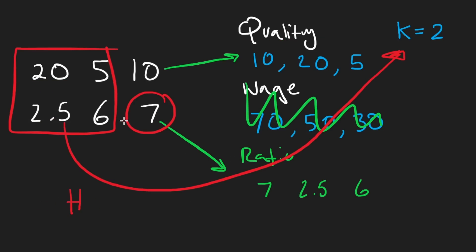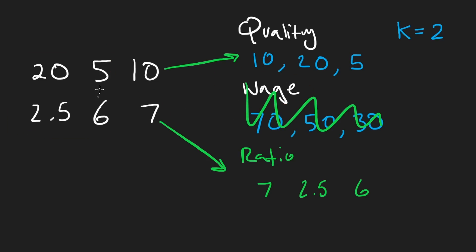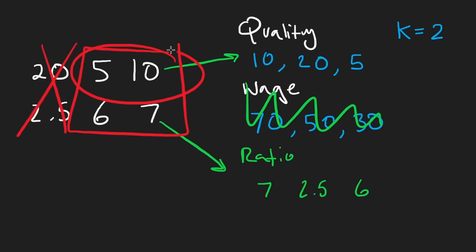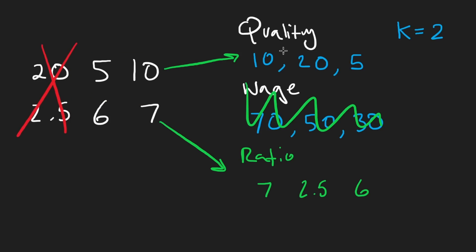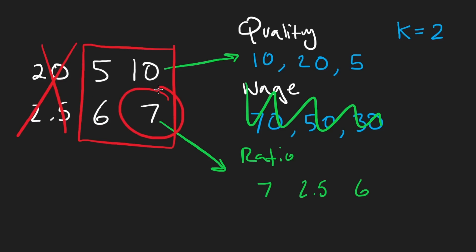And we're also going to keep track of the total quality in our set of K, because that's going to allow us to calculate the total that we're going to pay out. As we go through this — let's say this is our heap initially — we're going to end up popping this and adding this to our heap. The total quality is going to be five plus 10, which is 15. And the wage is going to be seven — it's always going to be the maximum of these two.